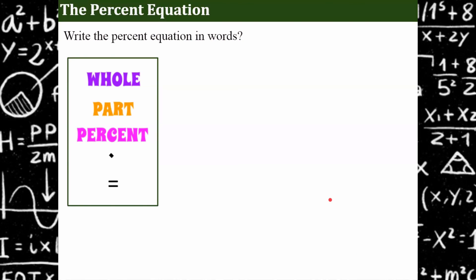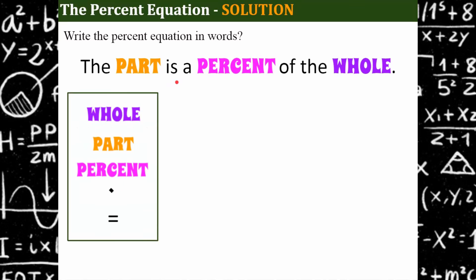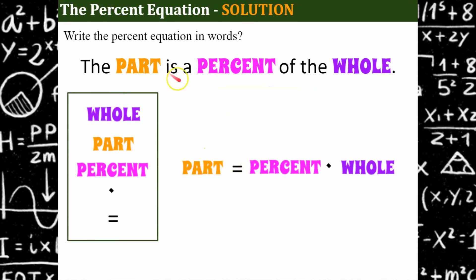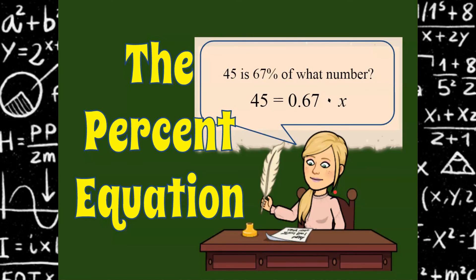One last question: can you rearrange these five items to make the percent equation? Remembering our sentence — 'the part is a percent of a whole' — the mathematical form is: part equals (that's our 'is') percent multiplied by (that's our 'of') whole. Part equals percent multiplied by whole, which makes sense: a part is a percent of a whole. Thank you for joining me today. I hope this clarified any confusion you had about the percent equation, and I hope you'll subscribe to my channel and come back to learn more soon. Have a good day.